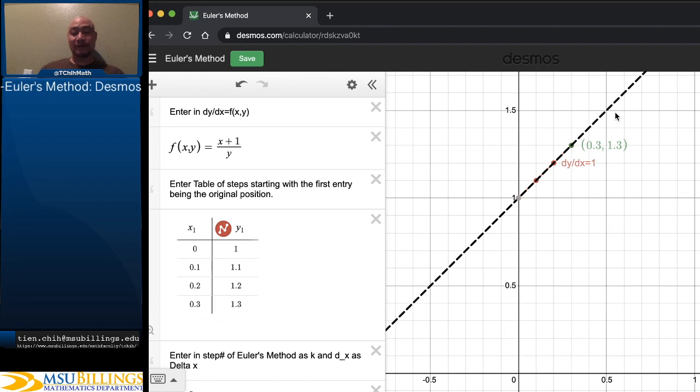So hopefully this gives us a sense of how Euler's method could be done in Desmos and could be done fairly easily and accurately without the tedium of doing a bunch of computations and the potential for errors that doing a bunch of hand computations would make. Alright, thank you very much. I hope this was helpful.